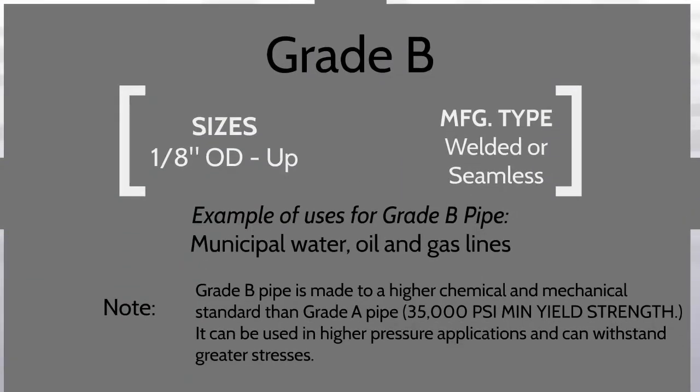Grade B pipe includes 1-1/8 inch OD, welded or seamless pipe. Grade B pipe can be used for municipal water, oil, and gas lines. Grade B pipe is made to a higher chemical and mechanical standard than grade A pipe. It can be used in higher pressure applications and can withstand greater stress.